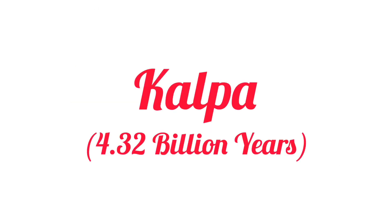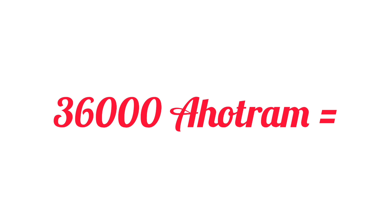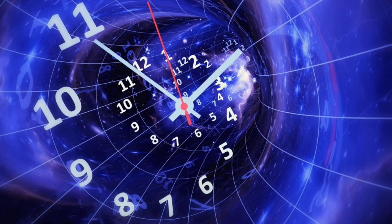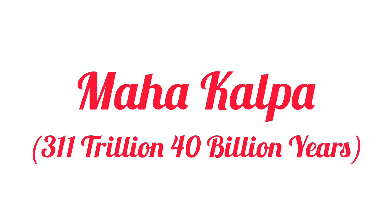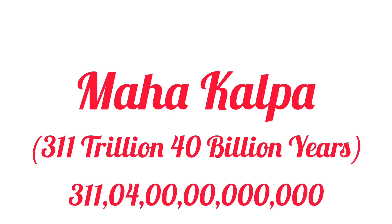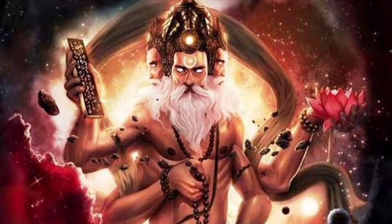Now that we know what a Kalp is, two such Kalps make one Ahutram. And finally, 36,000 such Ahutrams make the biggest Vedic unit of time — the Maha Kalp. To be precise, a Maha Kalp is a time span of 311 trillion and 40 billion human years, that is 31,104 followed by 10 zeros. And friends, this biggest unit of time is the entire lifespan of Lord Brahma, the creator.